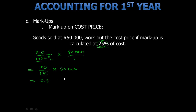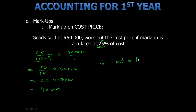This is equal to 0.8 multiplied by 50,000, which gives us 40,000. Therefore, cost price is equal to 40,000 Rand.